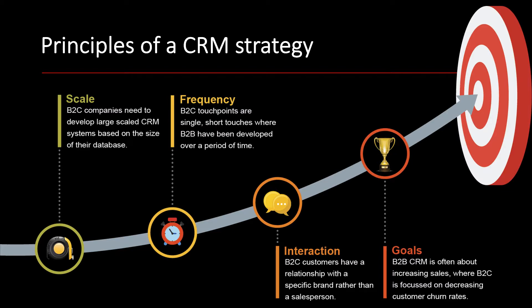Goals — B2B CRM is often about increasing sales, getting that person to close a $100 million sale, for example. B2C is more focused on maintaining your customer and keeping them happy. If the customer leaves, that's called a customer churn rate, and you want to drive that down as much as possible. A good CRM system will keep the customer engaged, aware of your products and new products, and make them want to do business with you.